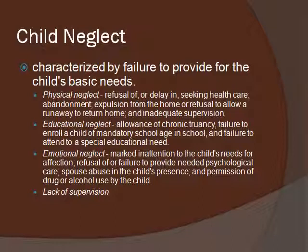Emotional neglect includes a marked inattention to a child's needs for affection, refusal of or failure to provide needed psychological care, and spousal abuse in the child's presence. In 2003, with the reauthorization of the Child Abuse Prevention and Treatment Act — renamed the Keeping Children and Families Safe Act — they included a provision that spousal abuse in the child's presence is actually a form of emotional abuse or emotional neglect. Previously, that wasn't classified as abuse for the child. But it is abusive for a child to witness their parent being beaten.